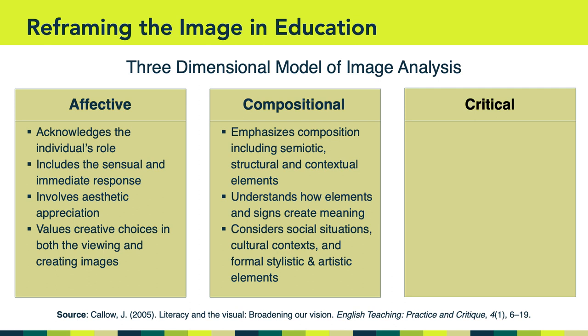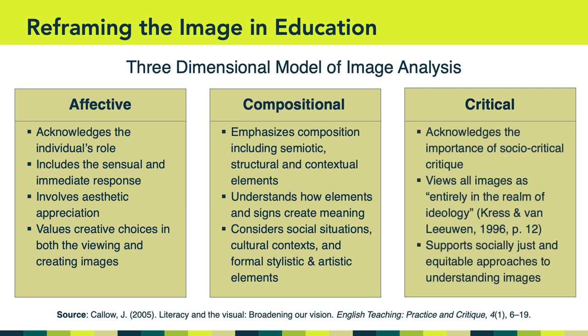The second dimension is the compositional one. This perspective emphasizes composition, including semiotic, structural, and contextual elements. This approach understands how elements and signs are put together to create meaning. It also considers social situations, cultural contexts, and formal stylistic and artistic elements in order to bring out understanding of a given image. The third and final dimension is the critical dimension. This perspective acknowledges the importance of socio-critical critique — it views all images as entirely in the realm of ideology, supporting socially just and equitable approaches to understanding visual content. For example, the critical perspective might ask who has the power to create this image, or who is represented or not represented by a particular image.